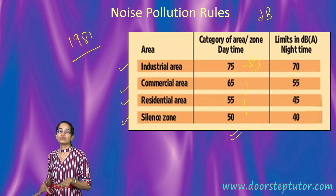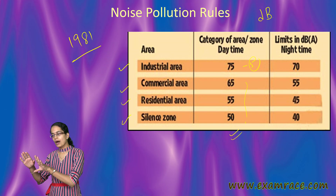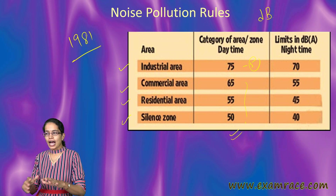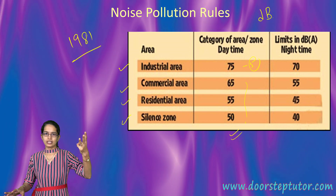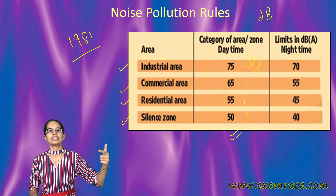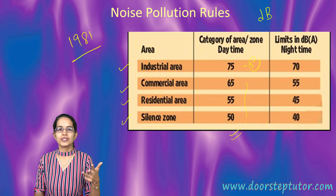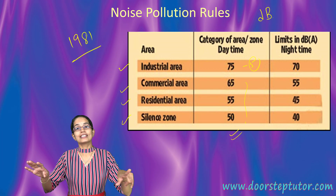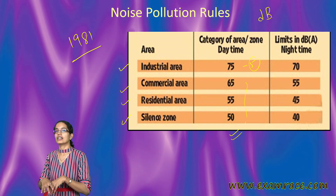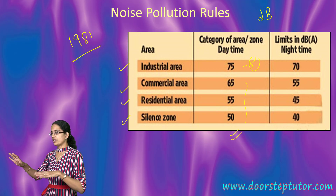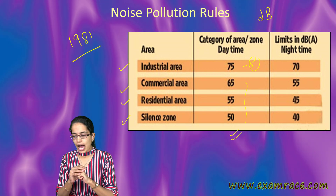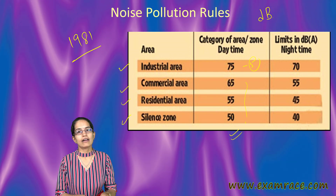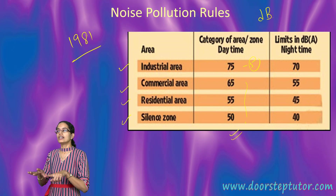The Noise Pollution Control Rules 2000 were part of the Environmental Protection Act 1996. The idea is to differentiate regions under four categories: industrial region, commercial region, residential region, and a silent zone. Silent zones are considered in areas not less than 100 meters around hospitals or educational institutions, and the state government has the responsibility to notify the silent zones.